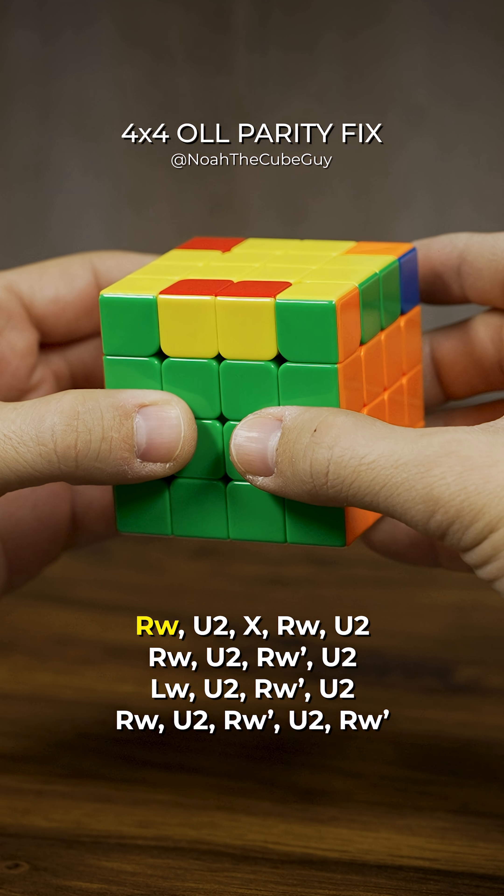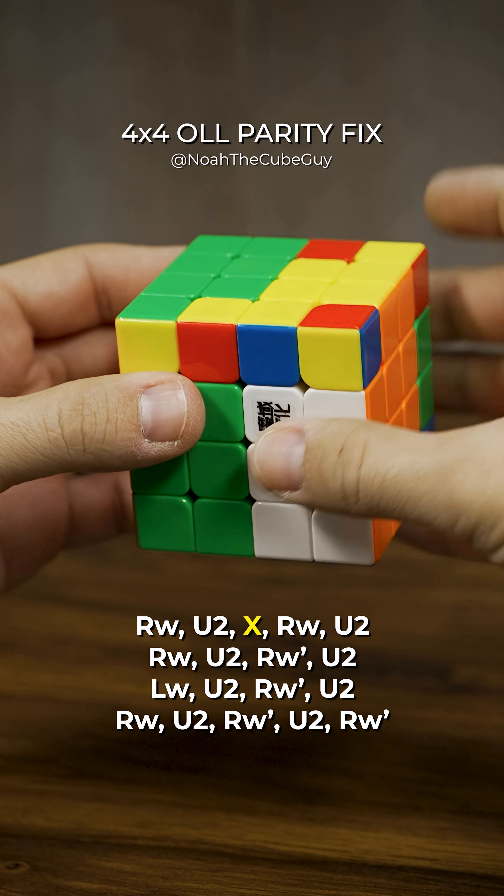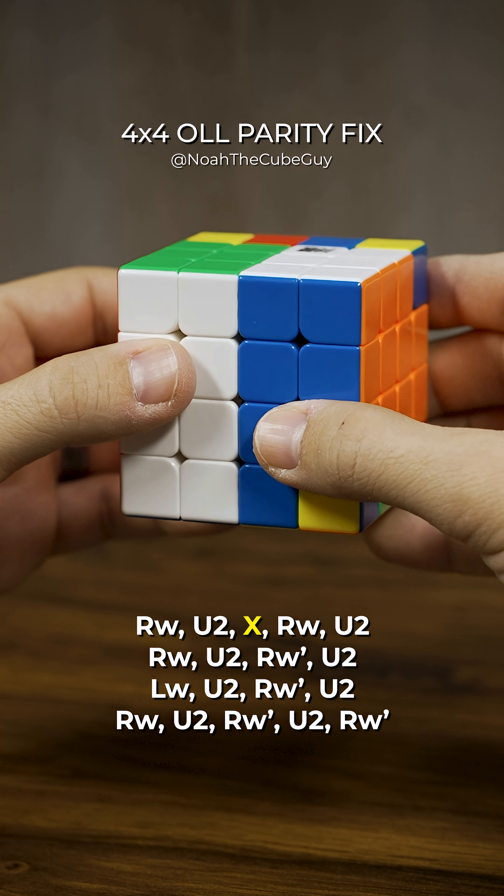Rotate the two right layers clockwise, up two times. Now take the cube and rotate it on its x-axis, which is away from us.